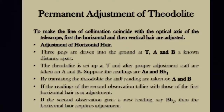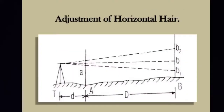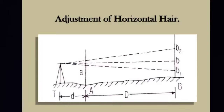For the horizontal hair adjustment, for example, we have three points: T, A, and B. The instrument is set at T and temporary adjustments are done. A ranging rod is fixed at point A, and a staff reading — call it small a — is noted. Then the ranging rod is placed at B and a reading B1 is obtained.